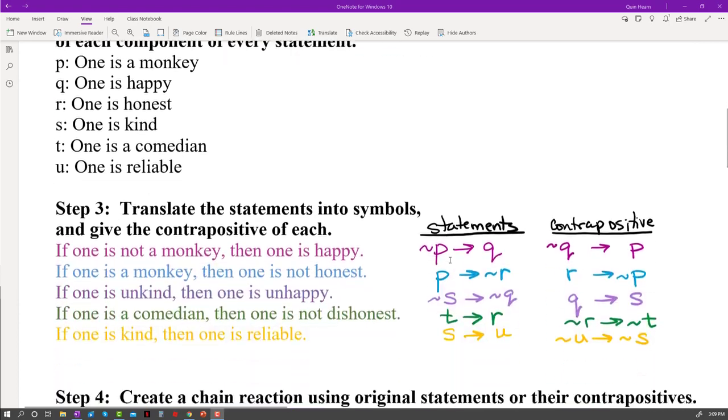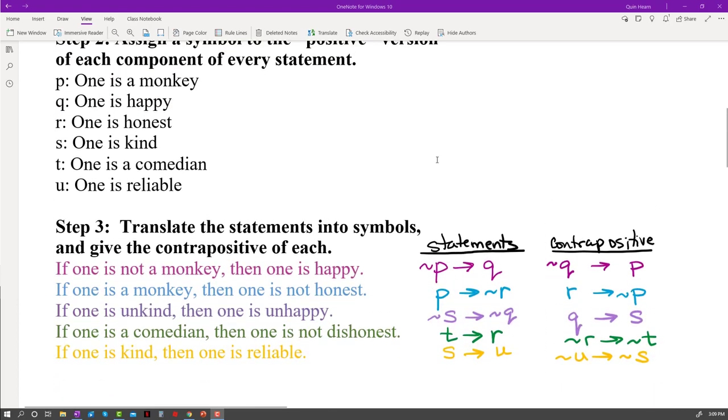Then we used those symbols to translate the statements into symbolic form. So we have the statements not P implies Q, P implies not R, not S implies not Q, T implies R, and S implies U.